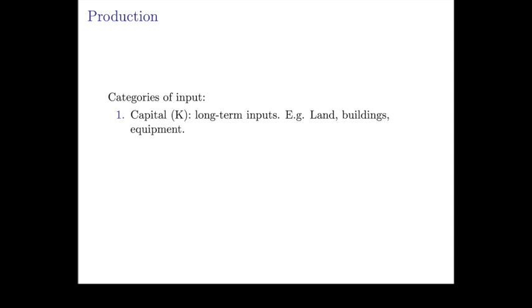There are broadly three categories of inputs. The first category of input is capital. So these are long-term inputs. Think of land, buildings, equipment. These things last many years. So we call these capital inputs.